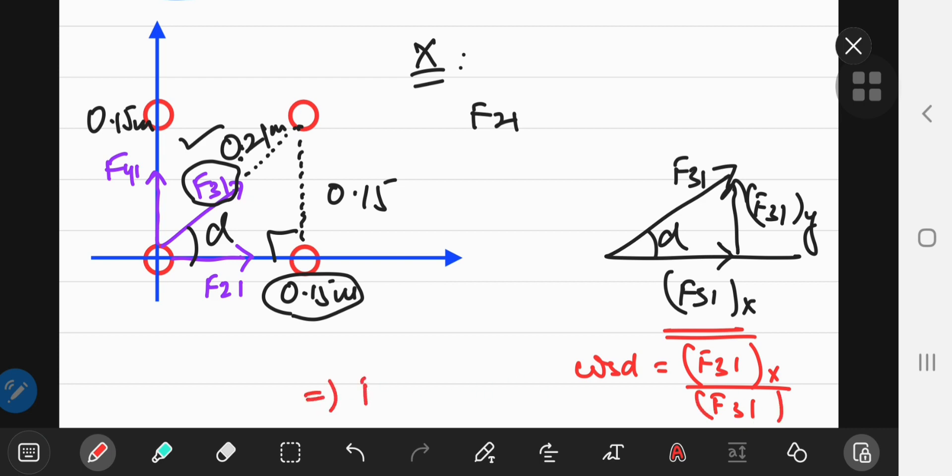This implies that F sub 3, 1 x equals F sub 3, 1 times the cosine of the angle alpha. And the cosine of alpha is just the base divided by the hypotenuse. So that's 0.15, the base divided by the hypotenuse of 0.21.